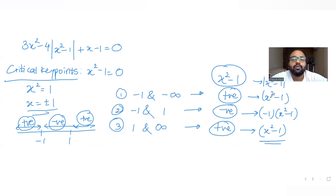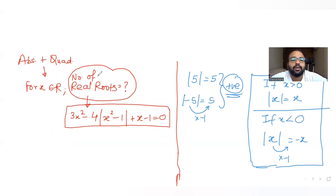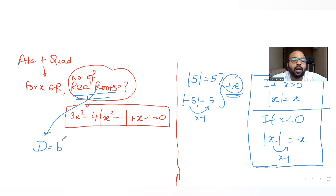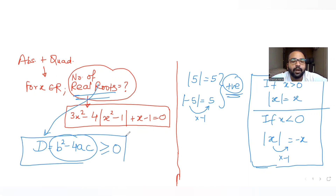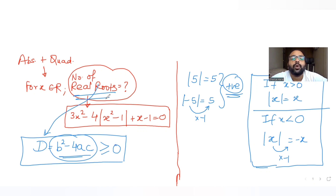We will substitute these values of the mod for all three regions separately and get three separate equations. What we need to find is the number of real roots, and we get real roots when the discriminant of the quadratic equation — that is b² - 4ac — is greater than or equal to zero.